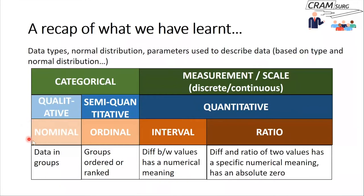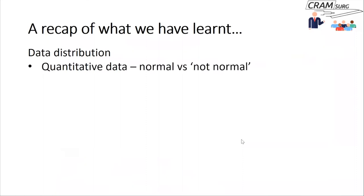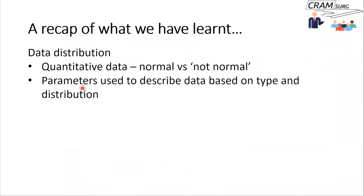Using another classification, we can split data into nominal data, ordinal data, interval data, and ratio data. I'll leave you to go back to those other presentations if you can't remember the differences between these types. We talked about data distribution — if it is quantitative data, we talked about the need to differentiate this into normally distributed data and data that is not normally distributed. And we talked about the various parameters that can be used to describe data based on type and distribution.